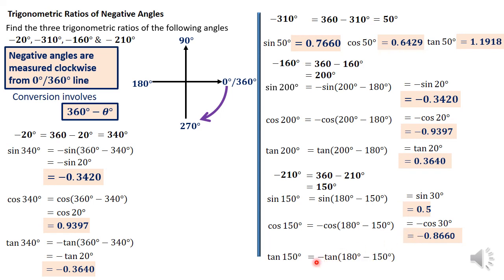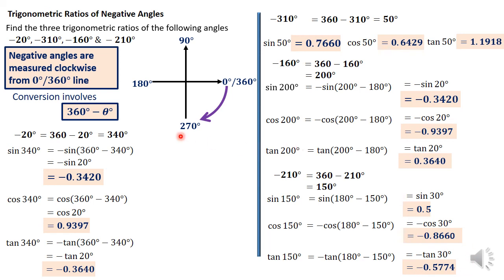Lastly, tan(150°) = negative tan(180 − 150°) = negative tan(30°) = −0.5774. That brings me to the end of this section on trigonometric ratios of negative angles. Please check out the next video — thank you.